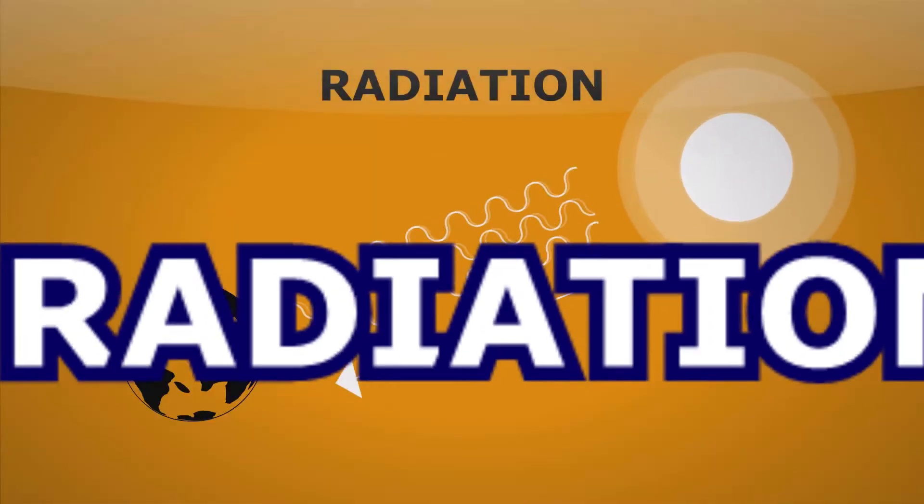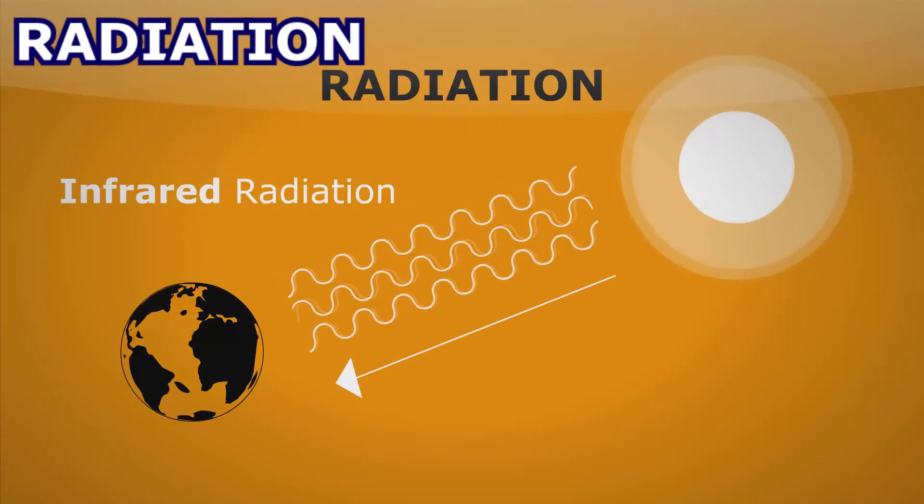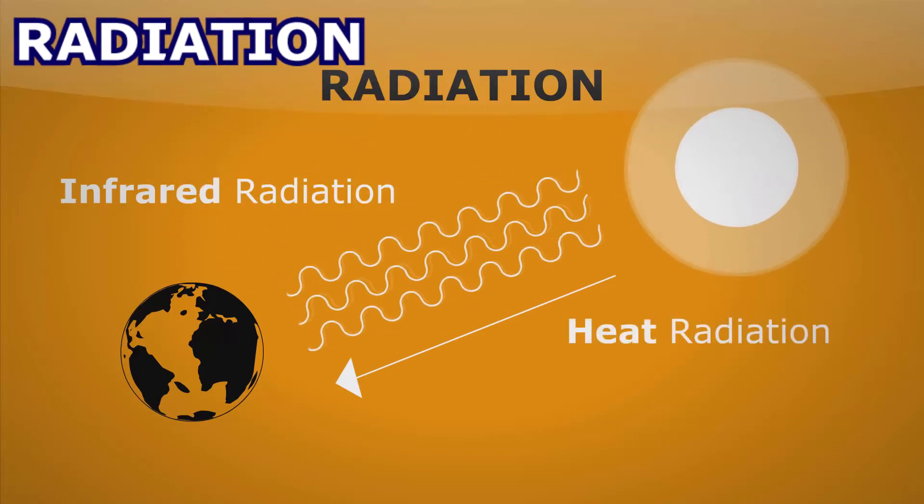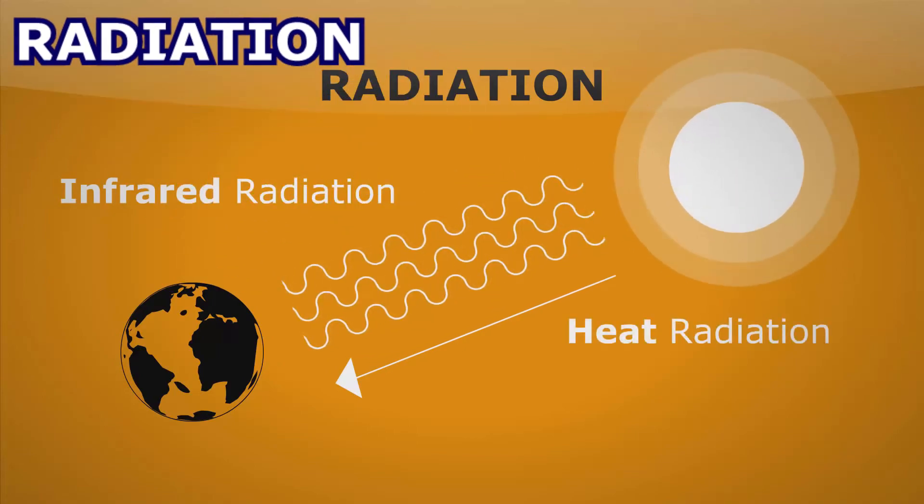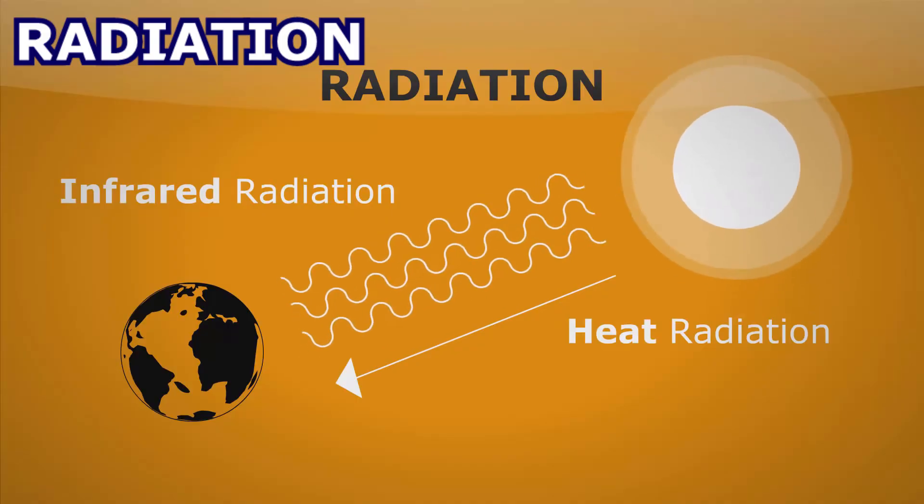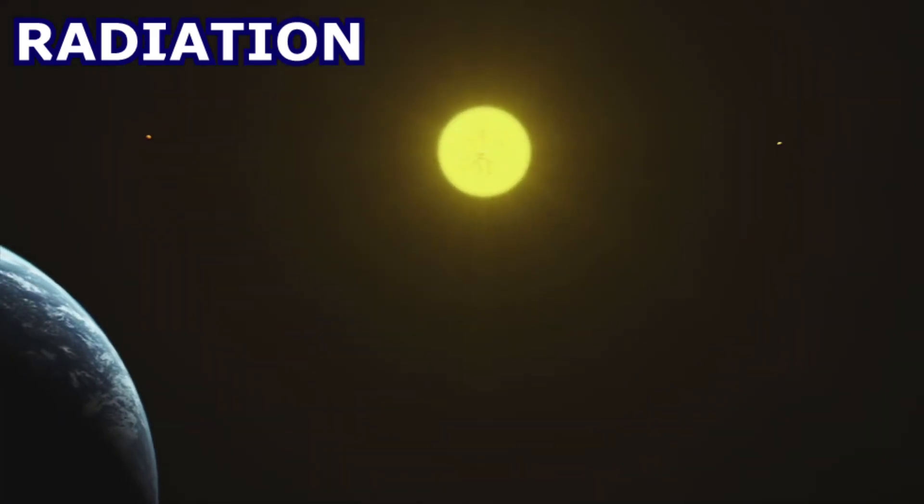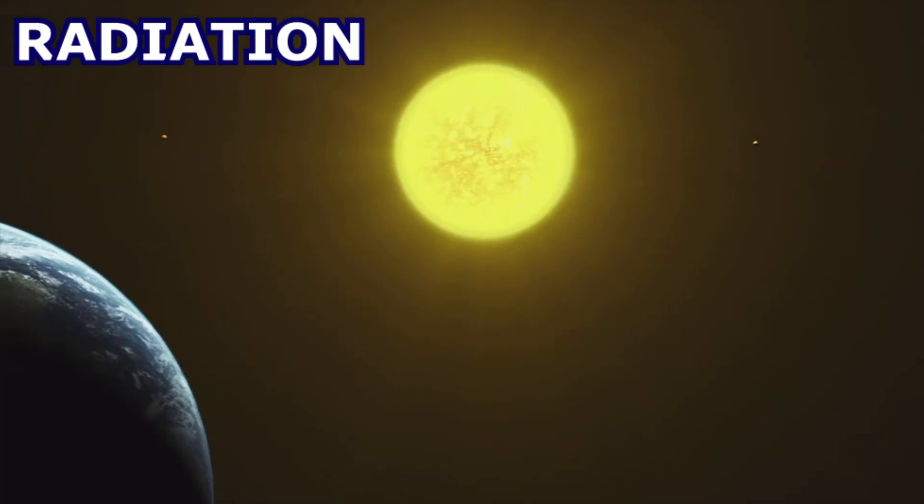And finally, radiation, which is the process by which heat, in the form of electromagnetic waves, is emitted in all directions. The best example is the heat of the Sun that travels to the Earth.